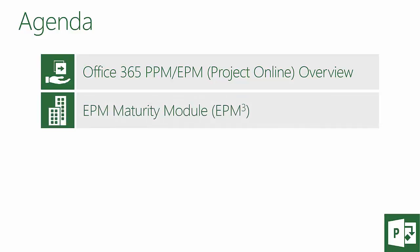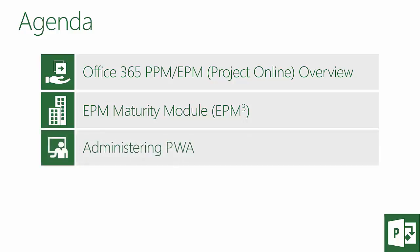In Module 2 we will look at deployment challenges and the concept of the EPM maturity model, or EPM 3. In Module 3 we discuss administering PWA, which includes provisioning the Project Web App and understanding site collections within Office 365.